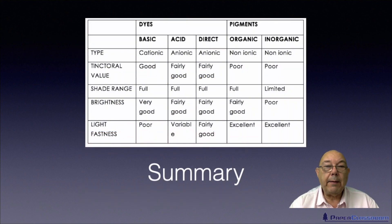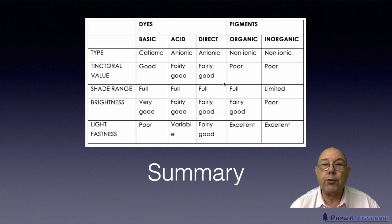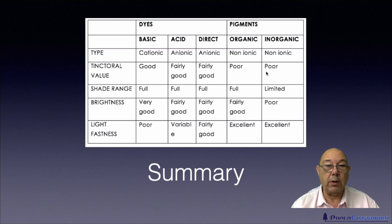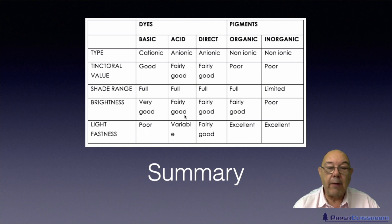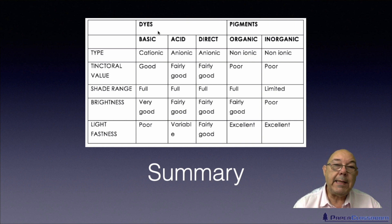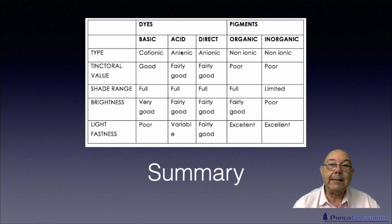This is really a summary of dyes and pigments. Looking at tinctorial value, dyes are fairly good and pigments are not. For shade range, you can get a full range with organic pigments and dyes, but not with inorganic. For brightness, these are all fairly good with just one that's a bit poor. But the key trend is light fastness: poor, variable, good, poor, variable, good. Basic dyes are cationic, while acid and direct dyes are both anionic, which means you can mix acid and direct dyes together, but you cannot mix basic dyes with either of them.